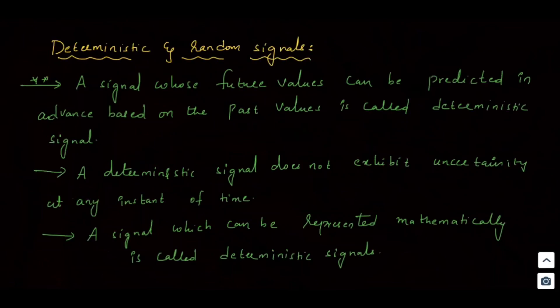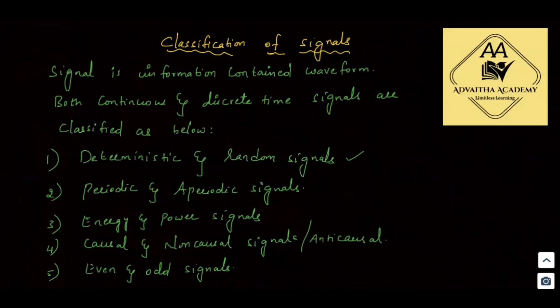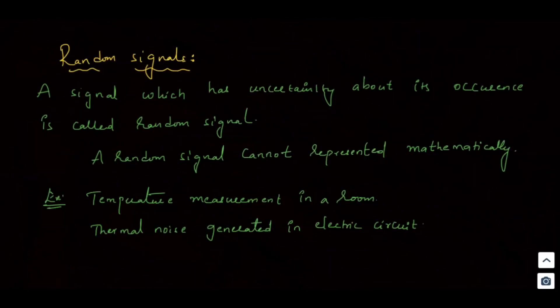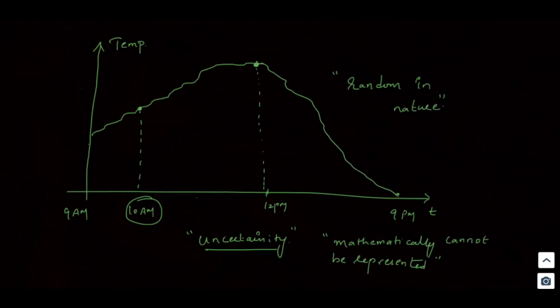So, the first classification of signals is deterministic and random signals. Complete the notes and revise the video. That's all for this video. We will meet in the next video. Jai Hind.